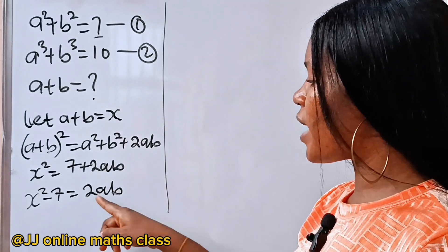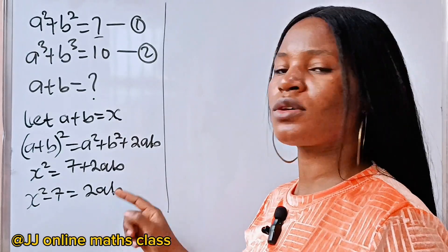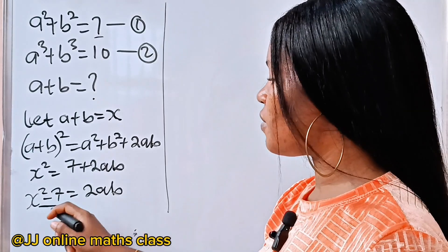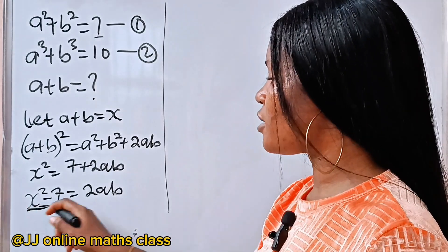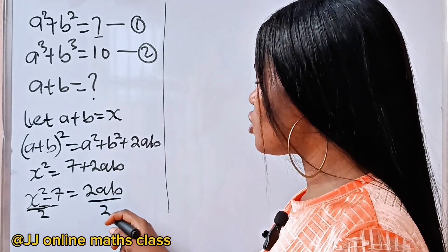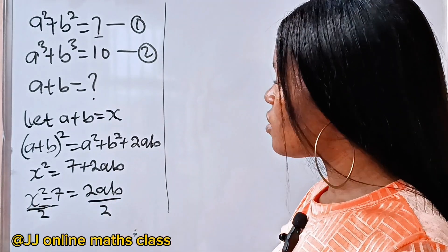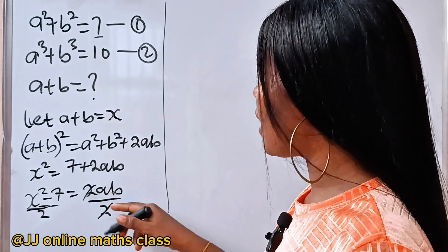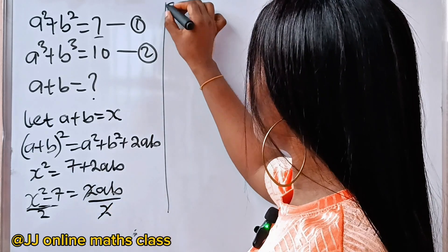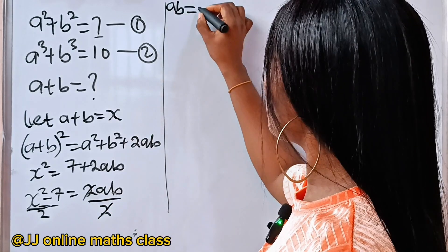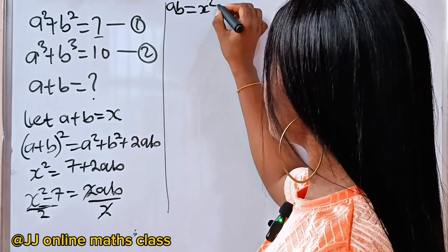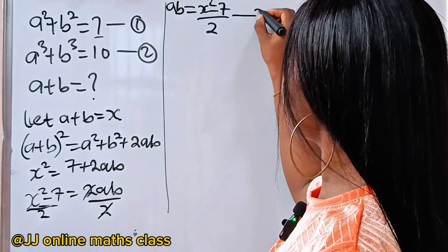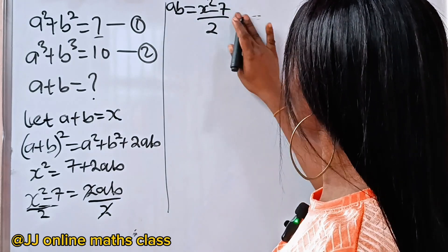Now, to get ab, we divide both sides of the equation by 2. So ab is equal to x squared minus 7 over 2. Let's call this equation 3.